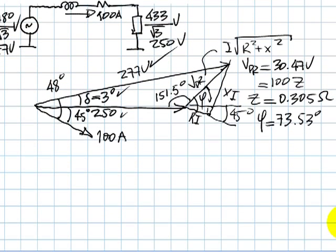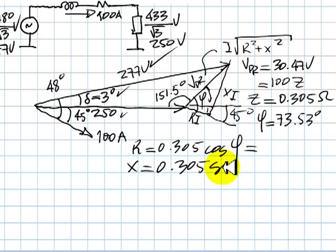Moving the screen a little bit further down. We know then that R is Z times the cosine of this angle, 0.305 cosine of this angle here. And X is 0.305 sine of that angle there. 86.4 milliohms for the resistance of the cable, and 0.292 ohms for the reactance of the cable. And that is the solution to part B of this exam. Thank you very much.